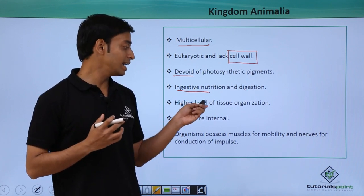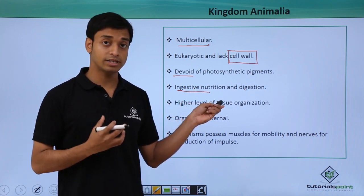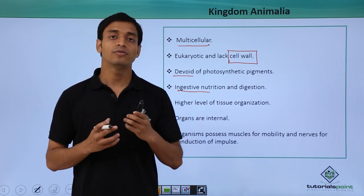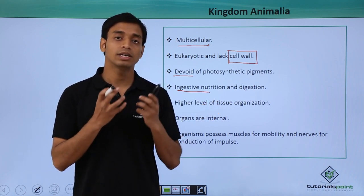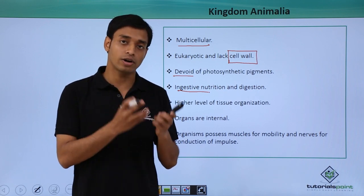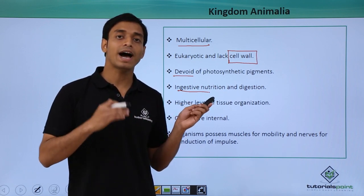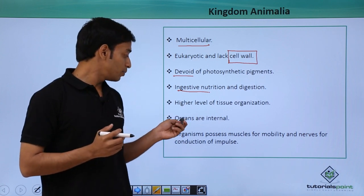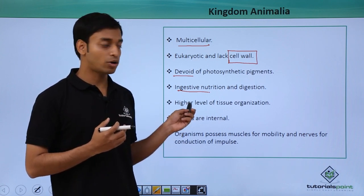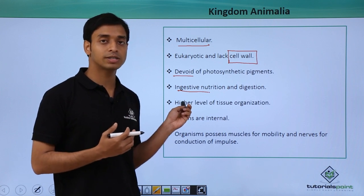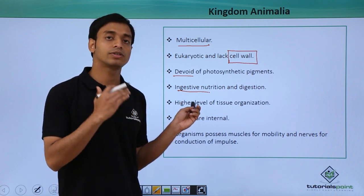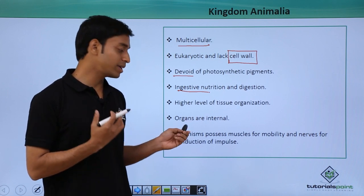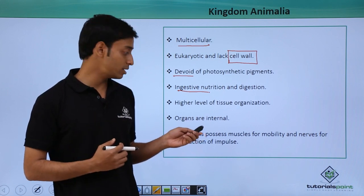Animals have a very high level of tissue organization. Because of this, they have very complex, well-developed structures, organs, and organelles. This is a very high level of tissue organization or differentiation. The organs formed because of this higher level of tissue differentiation are mostly internal, present inside the body of the organism.